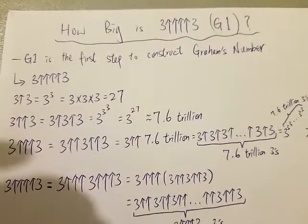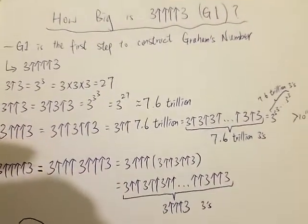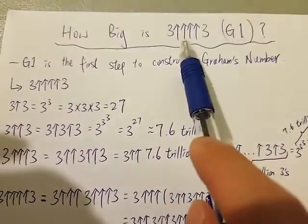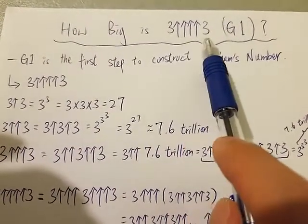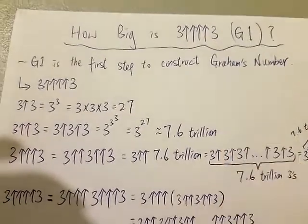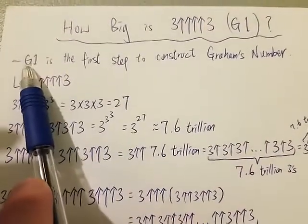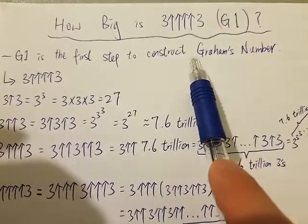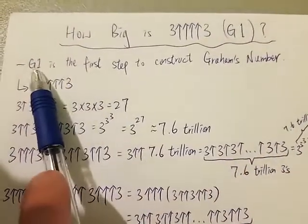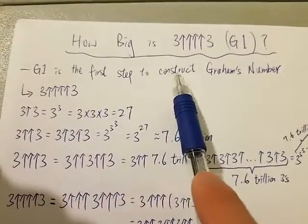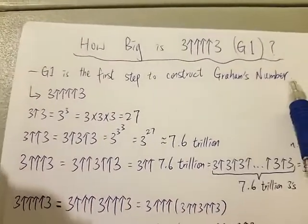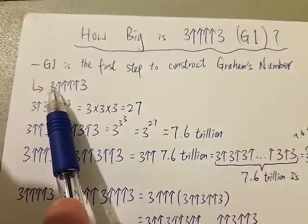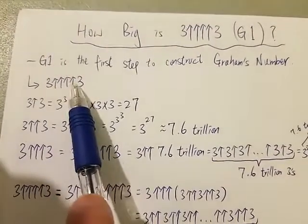Hi everyone, today I'm going to talk about how big is G1, which is 3 with 4 arrows 3. So what is G1? G1 came from the famous big number, Graham's number. It is the first step to construct Graham's number. So G1 is equal to 3, 4 arrows, 3.